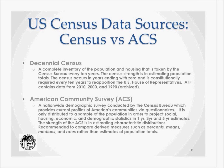What are the differences between Census and ACS? The Decennial Census is a complete inventory of the population and housing taken every 10 years. Its strength is the ability to estimate the population total. The Census occurs in years ending in zero and is constitutionally required to reapportion the U.S. House of Representatives. The American FactFinder website contains data from 2010, 2000, and 1990, with 1990 information archived on the site.